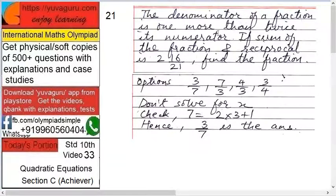The denominator of a fraction is one more than twice its numerator. If the sum of the fraction and its reciprocal is 16 upon 21, find the fraction.